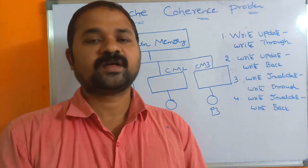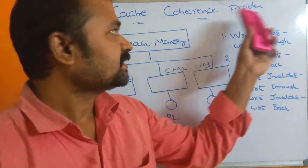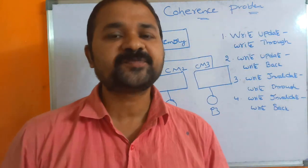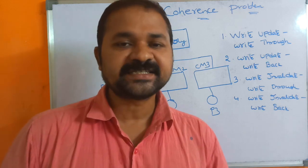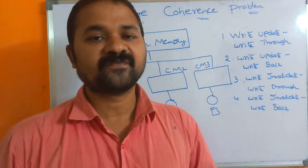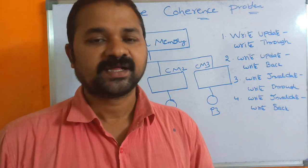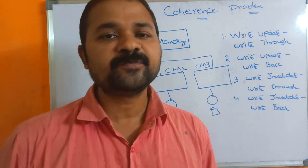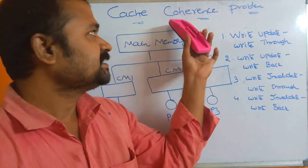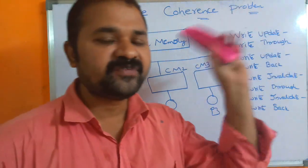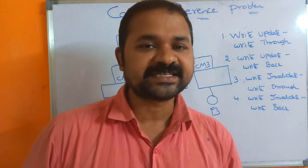In this video, we are going to discuss the cache coherence problem. In a multiprocessor system, we can have multiple processors in order to improve the performance of a system. This problem will occur mainly in a multiprocessor system.